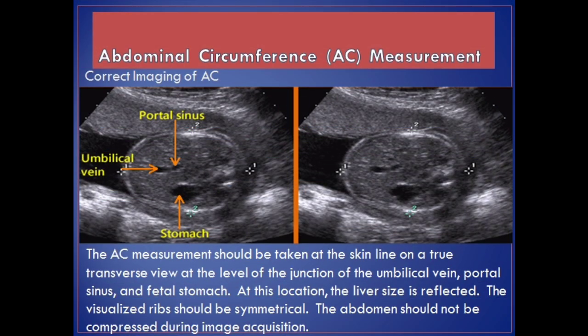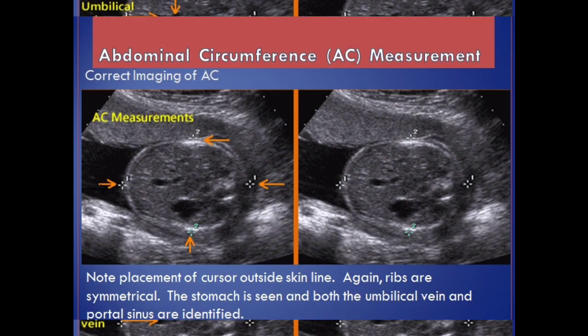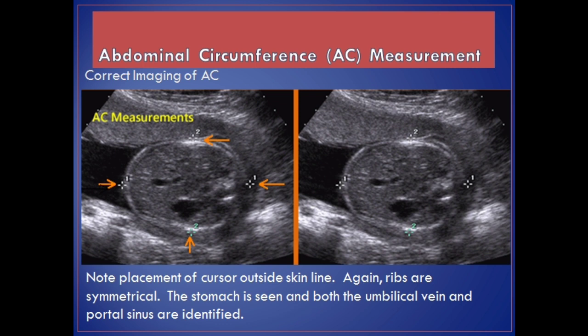Abdominal circumference, AC, measurement. The AC measurement should be taken at the skin line on a true transverse view at the level of the junction of the umbilical vein, portal sinus, and fetal stomach. At this location, the liver size is reflected. The visualized ribs should be symmetrical and the abdomen should not be compressed during image acquisition. Note placement of cursor outside the scan line. The stomach is seen and both the umbilical vein and portal sinus are identified.